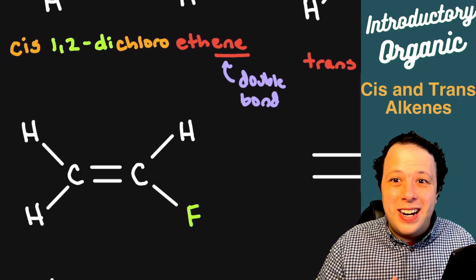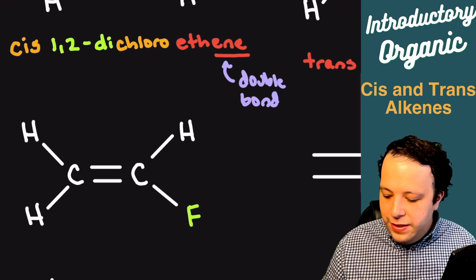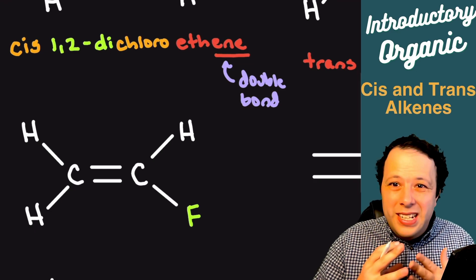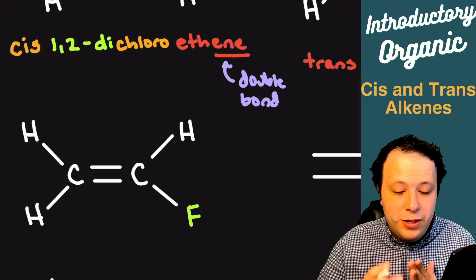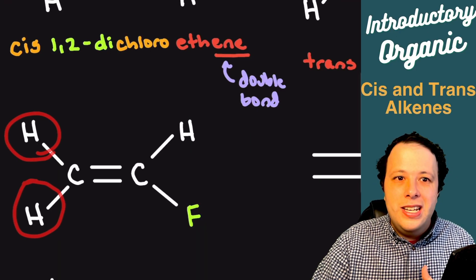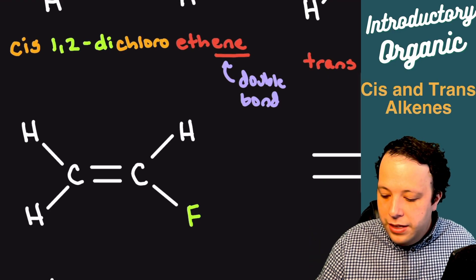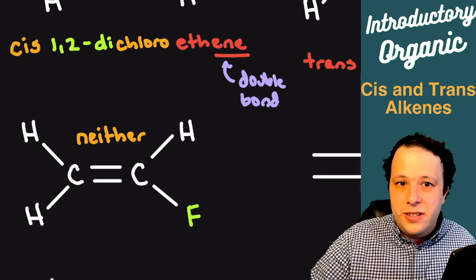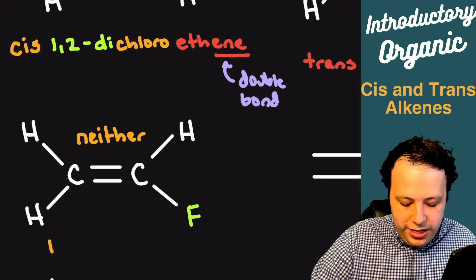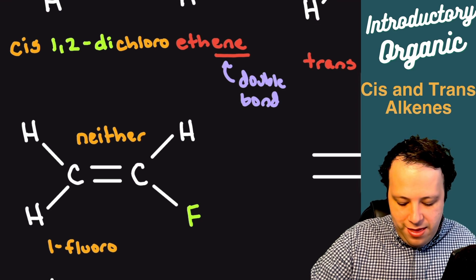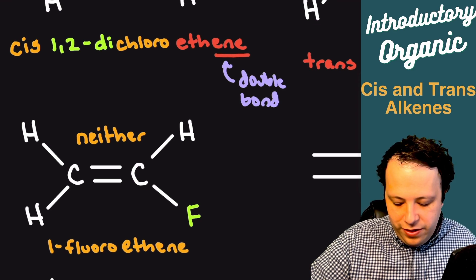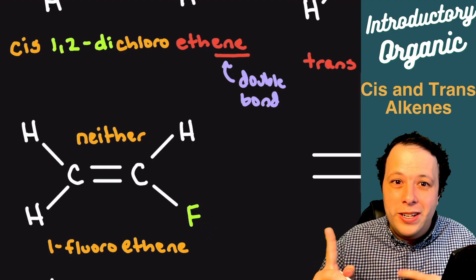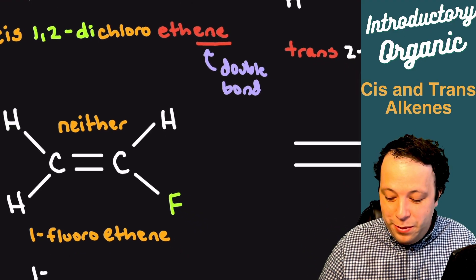Is the next one cis or trans? If I look at the left side, I see a hydrogen and another hydrogen — they are on the exact same side. You can't tell the difference between these two hydrogens because they're the exact same thing. So even though I have a fluorine on the other side, this is neither cis nor trans. We still name it like a normal alkene: 1-fluoroethene. Not all double bonds are cis or trans — only when you have unique groups on both sides of the double bond.